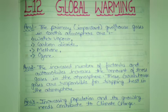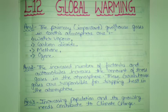Question 2: How are the greenhouse gases responsible for global warming? Answer: The increased number of factories and automobiles increases the amount of these gases in the atmosphere. These greenhouse gases are responsible for trapping heat in the atmosphere, causing our atmosphere to warm up. If the earth gets warmer, it will become difficult for people and animals to survive here.